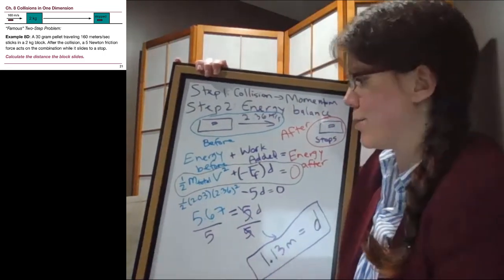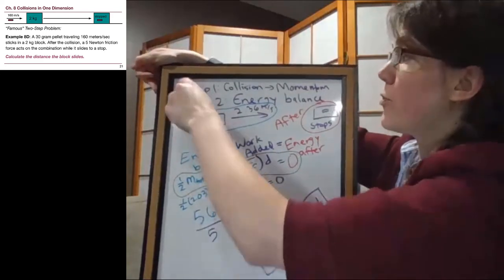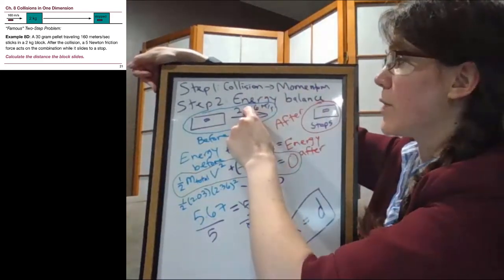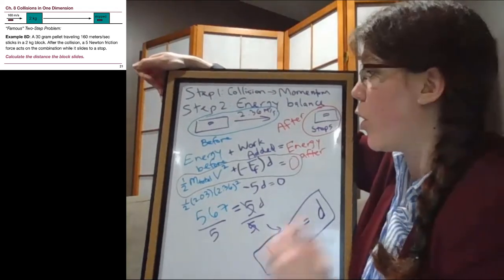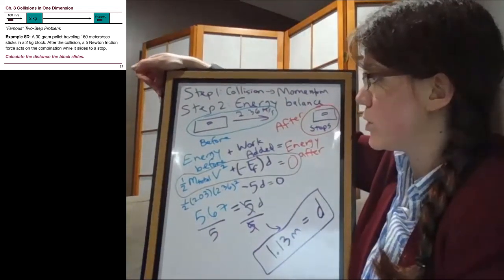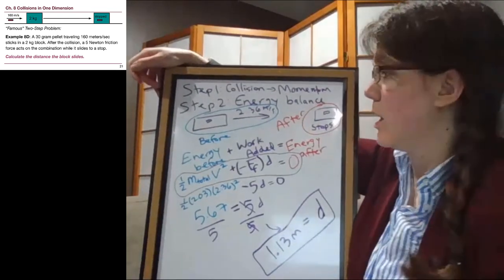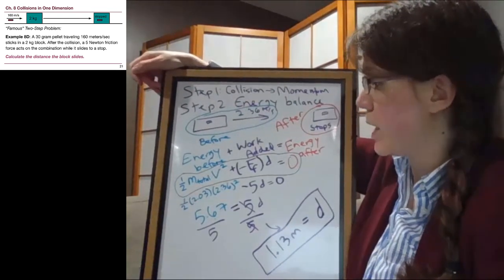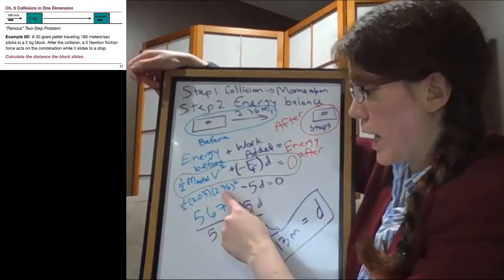As usual it's nice and angled towards me, but that's okay. So the first step was how we got this 2.36 meters per second. This problem would not have been solvable if all we tried to do was just a single energy problem with 160 meters per second initial speed.